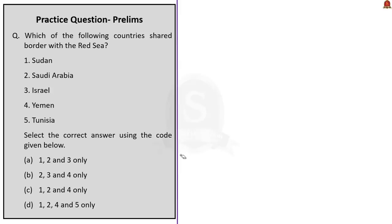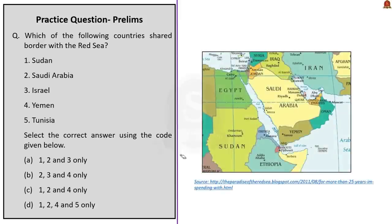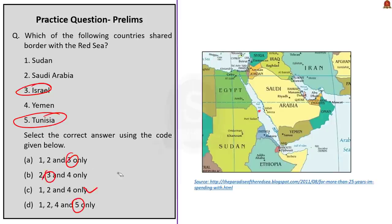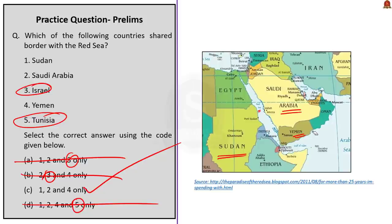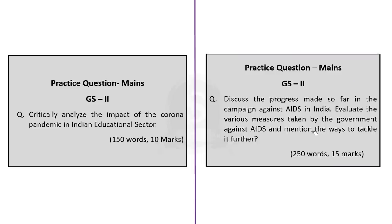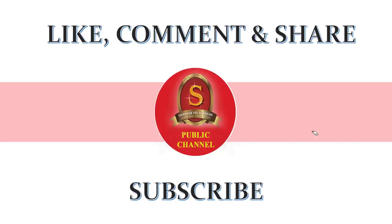Question 3: Which of the following countries share a border with the Red Sea? 1. Sudan, 2. Saudi Arabia, 3. Israel, 4. Yemen, 5. Tunisia. Israel and Tunisia do not share a border with the Red Sea. Sudan, Saudi Arabia, and Yemen share a border with the Red Sea — Sudan lies to the west, and Saudi Arabia and Yemen lie to the east. The answer is option C: 1, 2, and 4 only. Main practice questions are displayed on screen — write your answers and post in the comment section. Thank you.